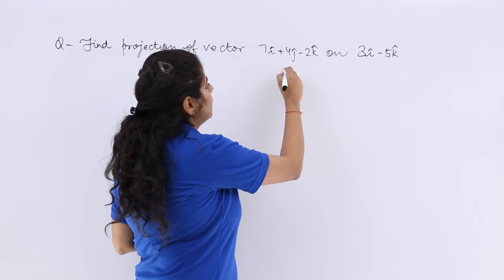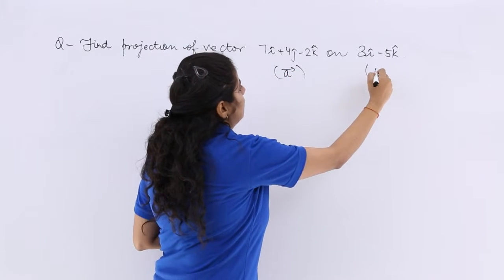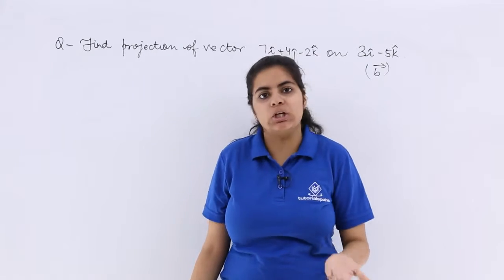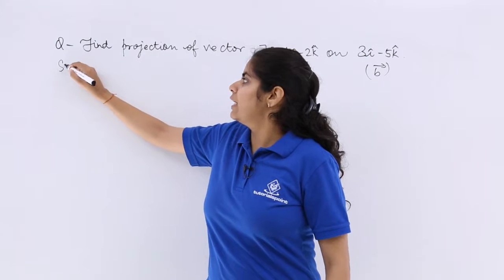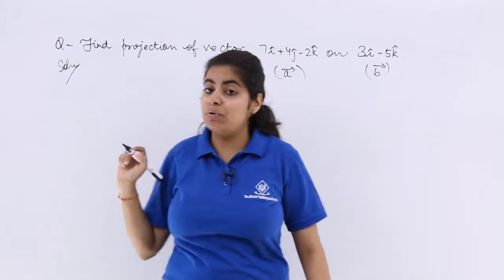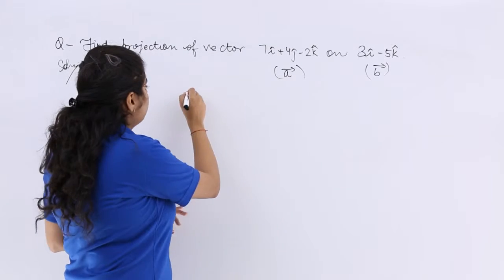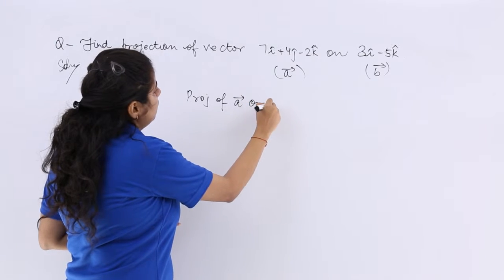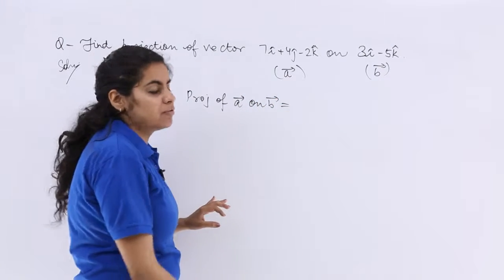So let's name the first vector as a vector and the second vector as b vector. So you have to find the projection of a vector on b vector. So if I write solution and if I have to find out the projection of a vector on b vector, what is my formula?